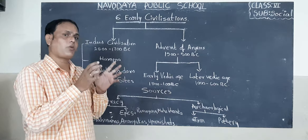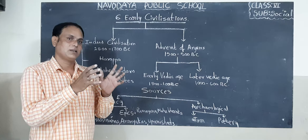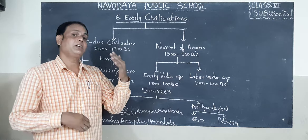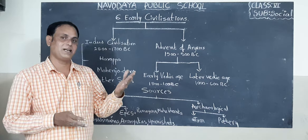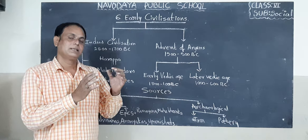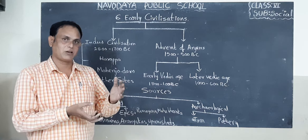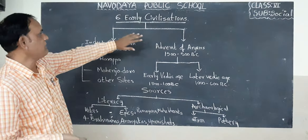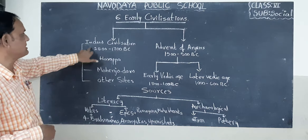The archaeologists found in our country and Pakistan some places. For example, the Great Bath was found in Mohenjo-daro. Harappa and Mohenjo-daro were the places where the Indus Valley civilization people lived, in our country and also some part of Pakistan.